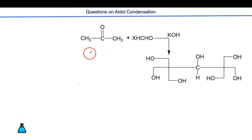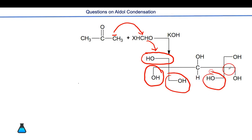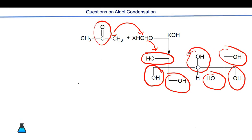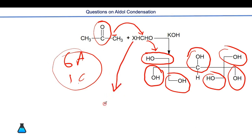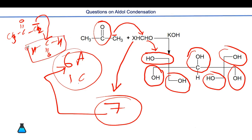Another question involves a complex aldol condensation product from CH₃CHO. Counting the structural units: one, two, three, four, five, six — this molecule comes from six CH₃CHO units undergoing aldol condensation. Additionally, this terminal carbonyl is also converted to CHO, meaning one Cannizzaro reaction takes place. So the total number of reactions involved are 6 aldol condensations plus 1 Cannizzaro reaction, giving a total of 7.